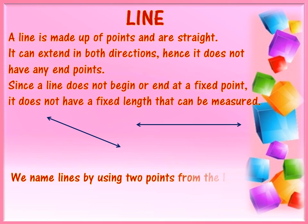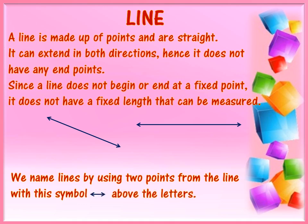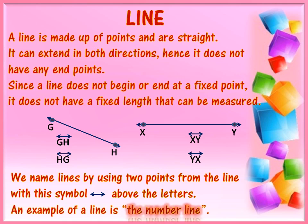We name lines by using two points from the opposite ends of the line with the symbol above the letters. In the first example, if we name one end of the line G and the other end H, then the line will be called line GH or line HG. In the second example, if one end is X and the other end is Y, then the line will be called line XY or line YX. An example of a line is the number line.